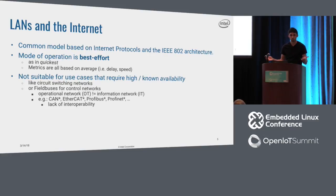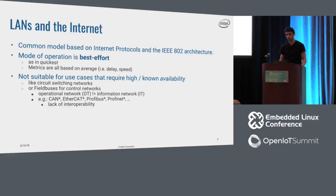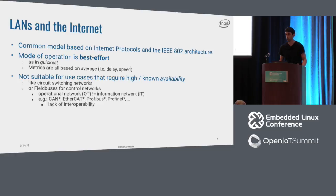We're all used to the networks we have everywhere nowadays, like local area networks or the internet. Everything is best effort — we care a lot about speed and throughput, and metrics are all based on averages: average delay, average bandwidth. Those are great networks, but they're not very suitable for use cases that require high or non-variable availability, like circuit switching networks or control networks. That's why we created a bunch of field buses in the past.